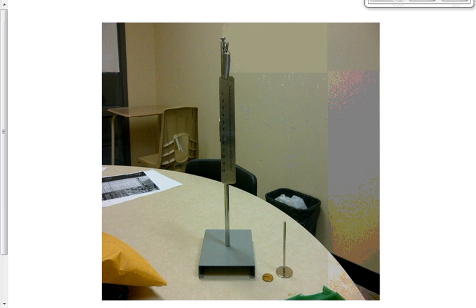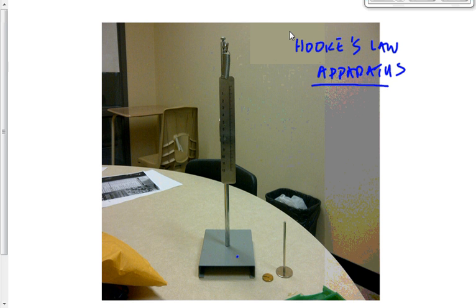The apparatus that you see up on the board right now is what you're going to use. We call it a Hooke's Law apparatus. It comes in a box and consists of a base that holds up a rod. Attached to the rod is this movable ruler here that we're going to measure our displacement with. At the top of the rod is a little hook with a spring on it. This is the spring. This is the important thing. This is what we want to keep constant because that's what we're going to find the spring constant for.